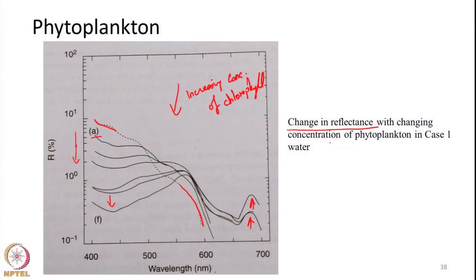As a summary for this lecture, we have seen a general introduction about the spectral reflectance property of water and the different factors that influence the spectral reflectance property of water bodies. We discussed the influence of vegetation on the reflectance. In the next class we will further discuss the other factors which influence the spectral reflectance nature of water. Thank you very much.